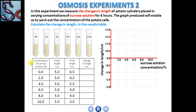This table shows the concentration of sugar solution in percent: 0, 2, 4, 6, 8, and 10. The initial length of the potato slender is constant. The final length of the potato slender changes after absorption of sugar solution. The change in length is plotted on the graph, starting at 1.5 cm.